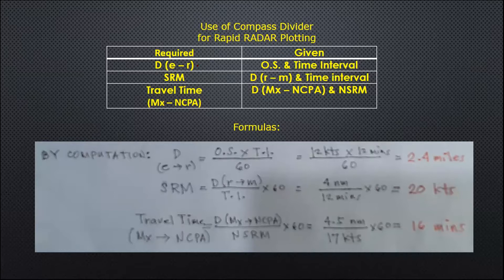You are to solve your distance E to R given your own speed and time interval; your SRM given your distance from R to M and your time interval; and your travel time from MX to NCPA given your distance from MX to NCPA and also your new SRM.